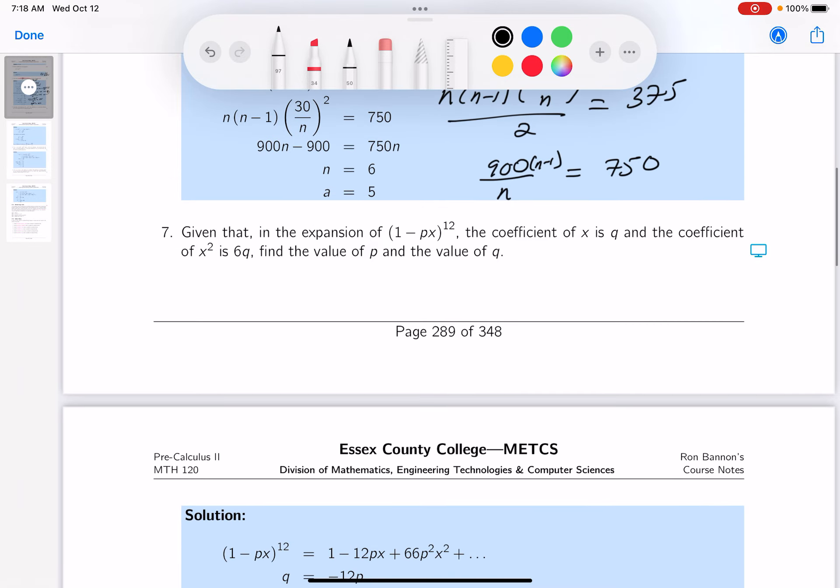All right, let's keep doing this. What do you get? 900n minus 900 equals 750n. That's going to be 150n equals 900. And n is going to be equal to 6.